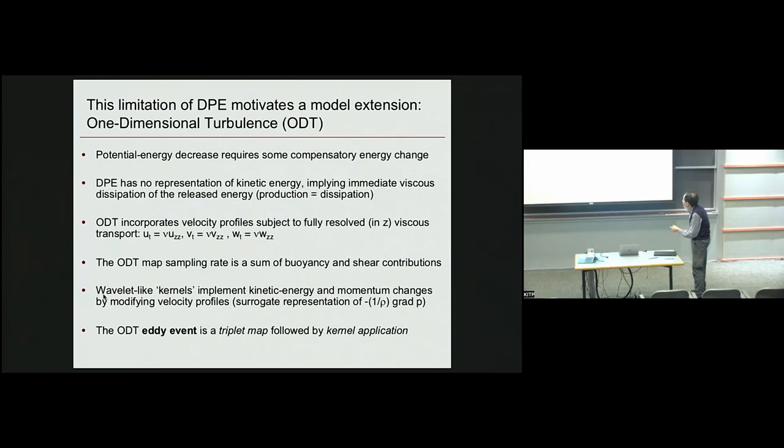Let's get some kinetic energy into the model. One way to do it is just put in a bunch of velocity profiles, and then we will advance them with the viscous equations, and we'll triplet map them. However, we don't merely need these profiles, but we need to be able to exchange energy between them and the other source. We already know how to get potential energy out of the density profile, both to air to subtract energy to these velocity profiles. We use what are called kernels. It's a wavelet-like method. The point is it's the mechanism that allows conservation of total energy to be enforced. So in any event is a triplet map followed by kernel application.